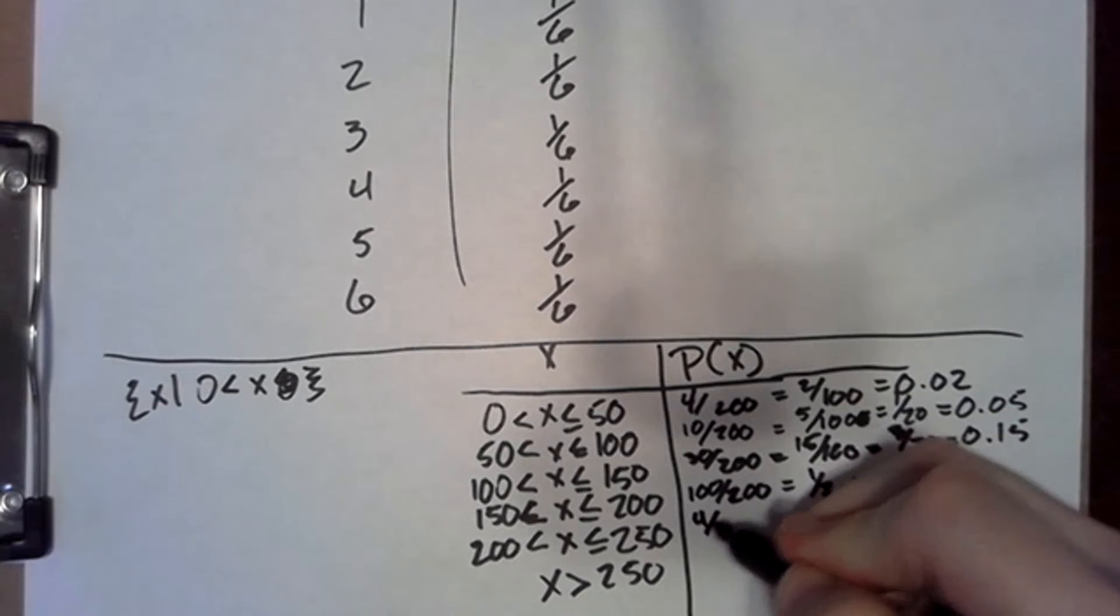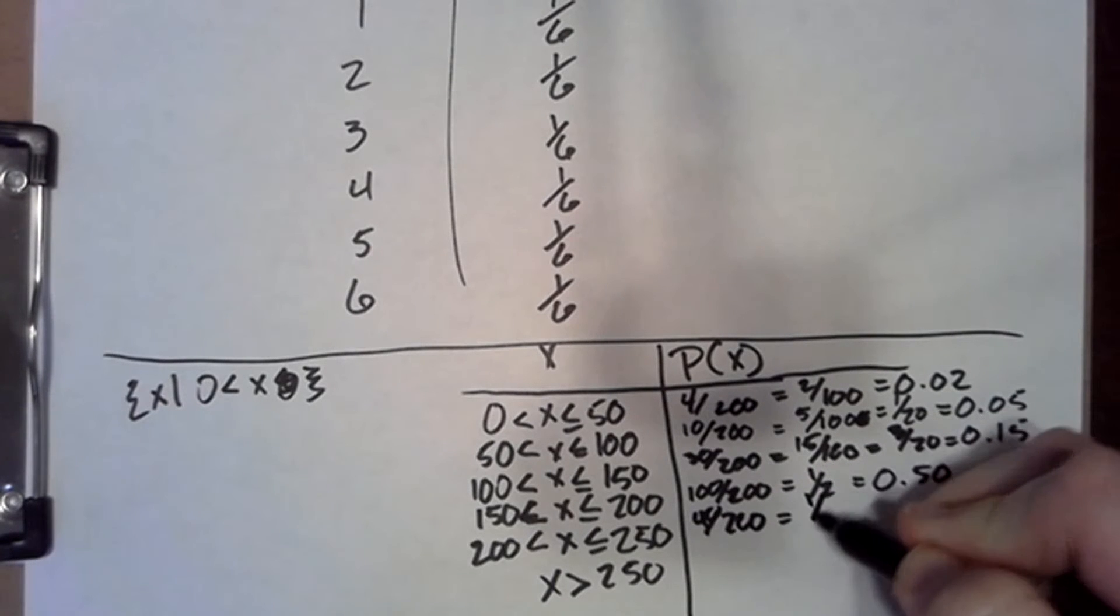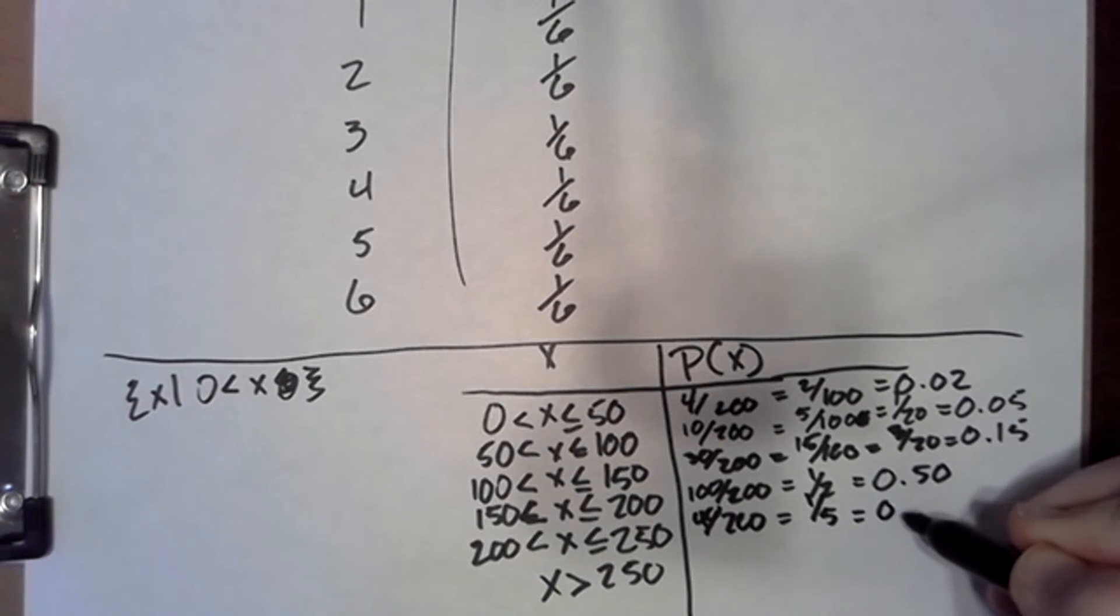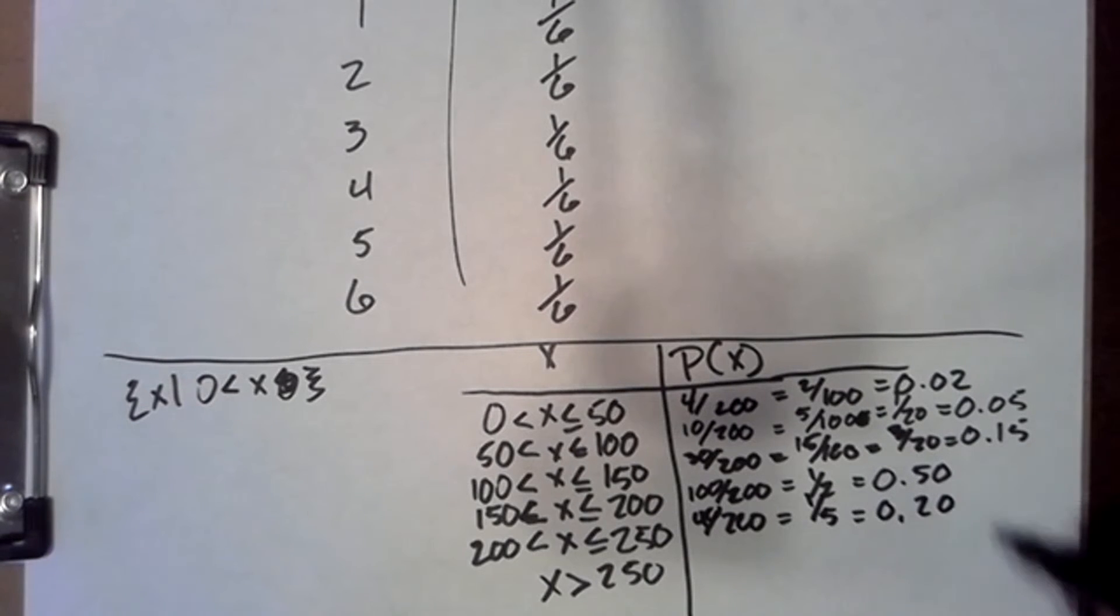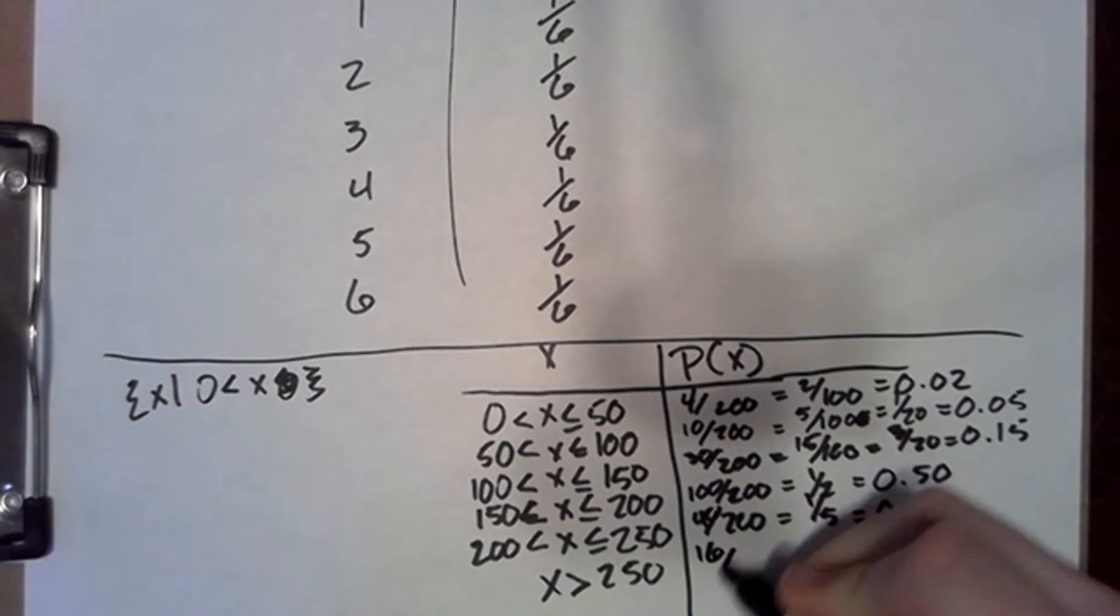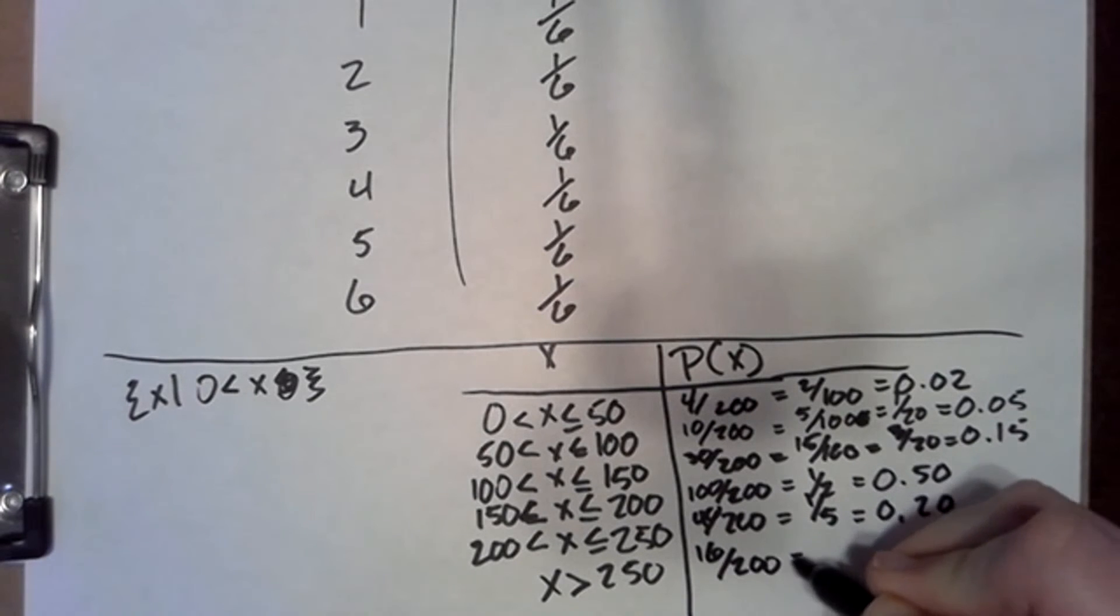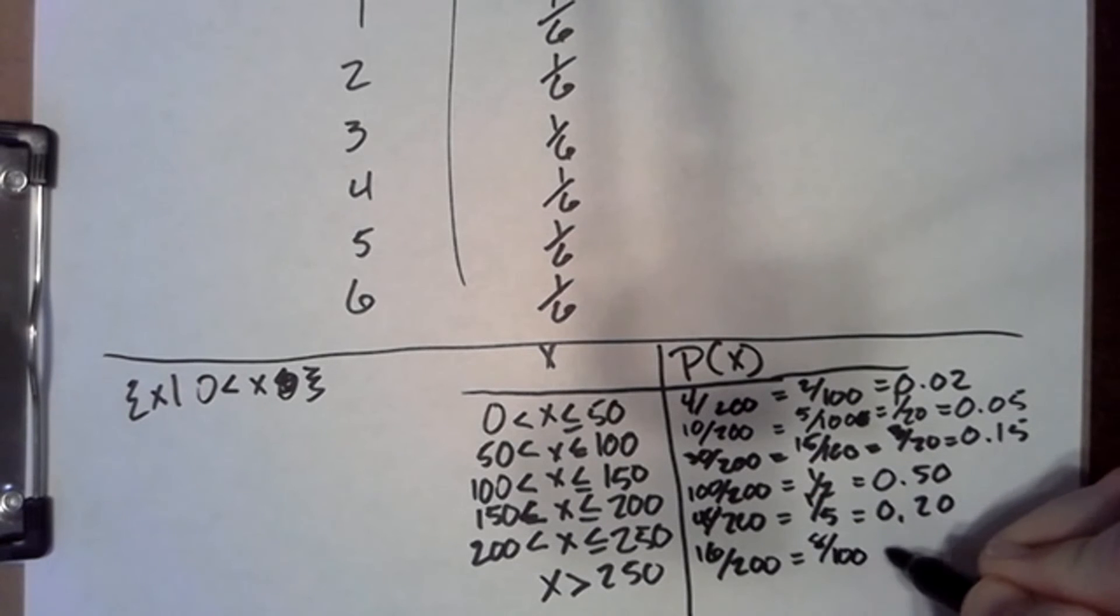For 200 to 250, that happens 40 times. 40 out of 200 is the same as one-fifth or 0.20. And finally, from 250 on, we've got that 16 times. 16 out of 200 is the same as 8 out of 100 or 0.08.